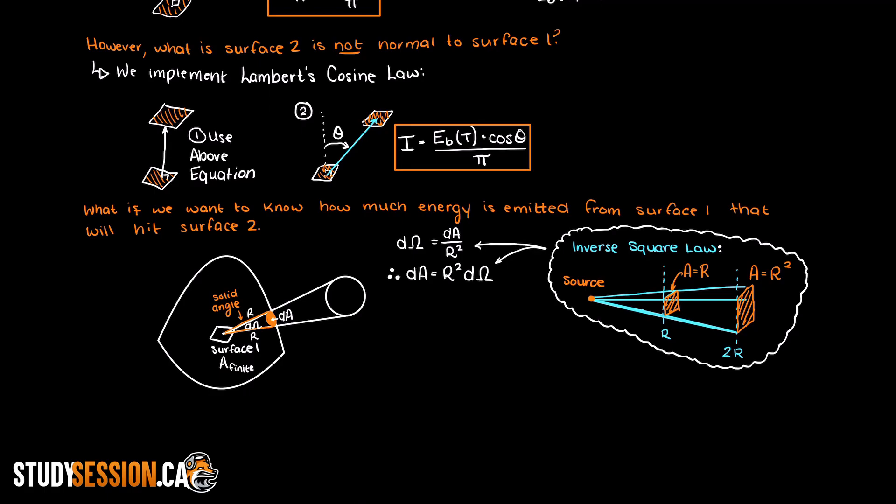However, if we take two radius steps away from our source, our area covered is now going to be r squared. So every step from our source we are expanding at r to the power of r steps away.